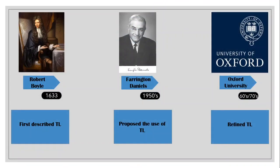First, we're going to talk a little bit about the history of thermoluminescence dating, and we can't do that without talking about Robert Boyle. In 1633, Boyle first described thermoluminescence to the Royal Society, explaining that his body's heat had illuminated a diamond. Then we move on to Farrington Daniels — jumping way into the future to the 1950s, he proposed the use of thermoluminescence to date pottery. And then Oxford University, just a couple years later in the 60s and 70s, really refined that idea and created what we know today as thermoluminescence dating.